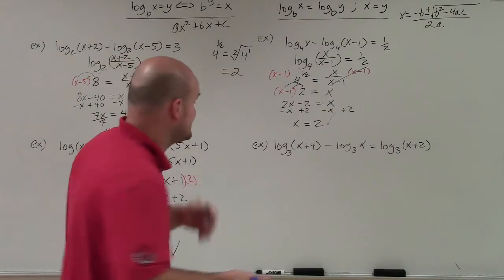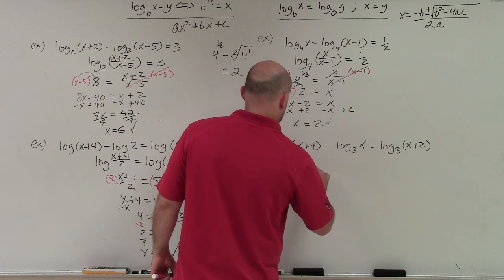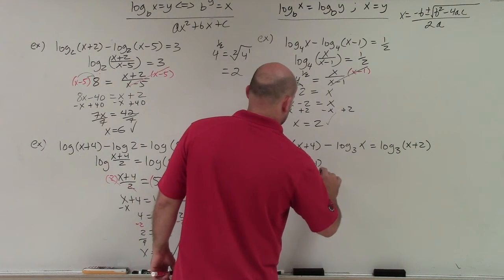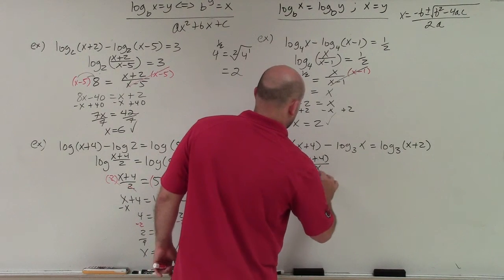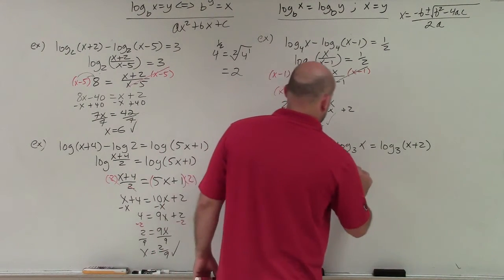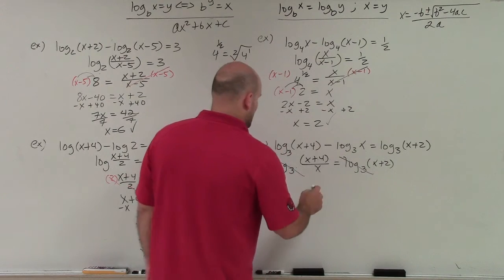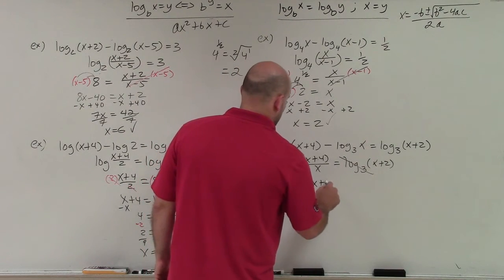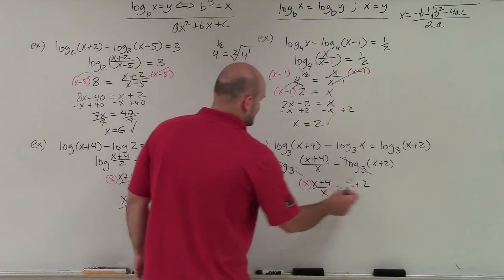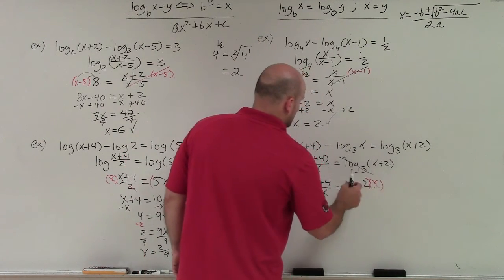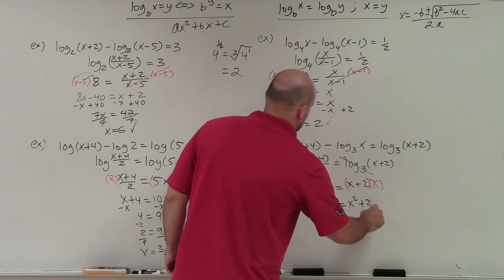All right. Last example here. Again, we're going to do the exact same thing. So I have log base 3 of x plus 4 over x equals log base 3 of x plus 2. OK. Well now, I can divide those out. And so therefore, I'm left with x plus 4 over x equals x plus 2. To get the x off the denominator, I'm going to multiply by x on both sides. Again, remember to put in parentheses. So I'm left with x plus 4 equals x squared plus 2x.